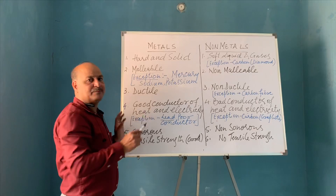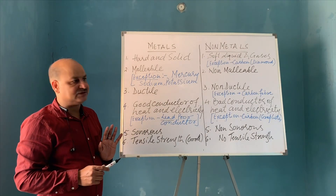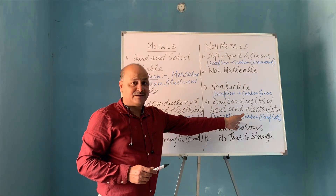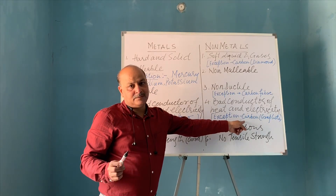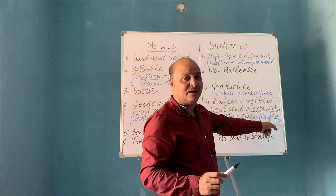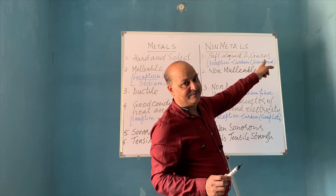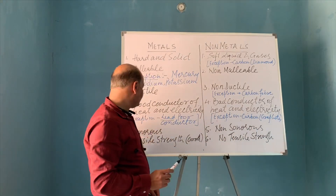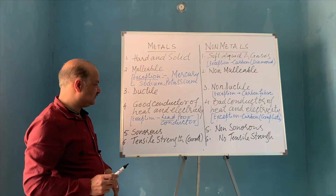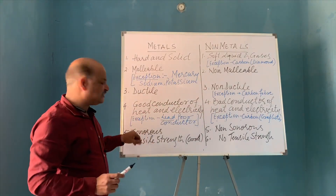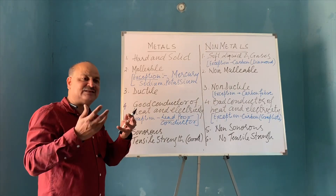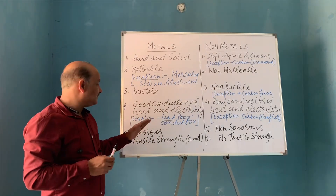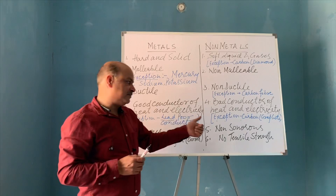Exceptions in conductivity: lead is a poor conductor of electricity and heat. Non-metals are poor conductors. Exception: carbon, although a non-metal, in one of its allotropes — graphite — is a good conductor of electricity. The fifth point: metals are sonorous and non-metals are non-sonorous. Sonorous means producing sound — you would have seen a school bell; when struck with something it produces sound, which tells us metals are sonorous.